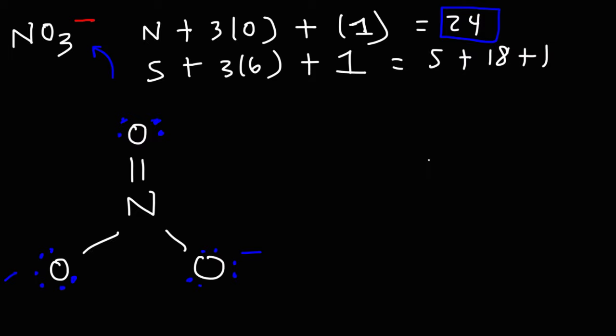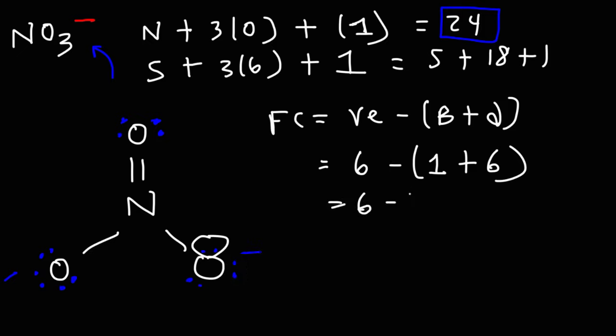In order to calculate the charge, we could use the formal charge formula, which is equal to the number of valence electrons minus the bonds and the dots around that element. So in the case of, let's use this oxygen as an example, it has six valence electrons. Oxygen is in group 6A of the periodic table. And in that structure, it has one bond and six dots. This is two, four, six dots. So this is six minus seven, which gives it a negative one charge.